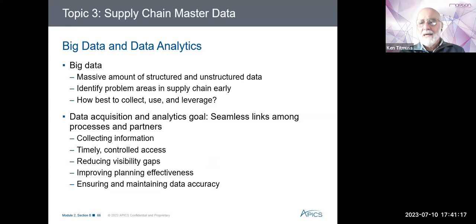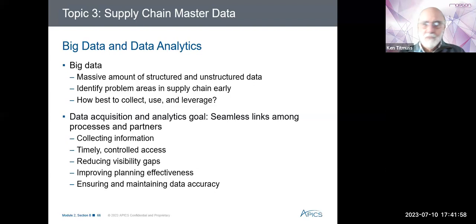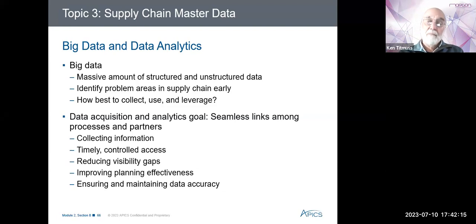We need to control who can read or see what data, who can change data, and who can add data — this needs to be very closely controlled. We need to reduce visibility gaps; high levels of supply chain maturity provide information such as planned versus actual lead times, order tracking, and exceptional alerts. We also need to ensure and maintain data accuracy. Perceptions of accuracy influence systems adoption and trust. If people feel the data they have is inaccurate, they won't trust the system — they'll go back to their spreadsheets to work out what they need to buy, make, or ship. It's very important that people trust the system, and they can only do that if you ensure data accuracy.